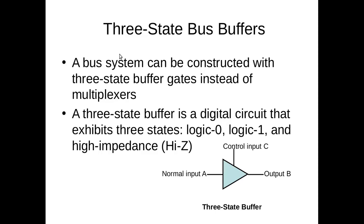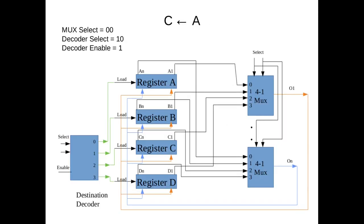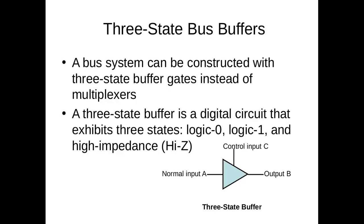In our example there are only 4 registers, but in actual cases there will be many more registers. In that case, this type of design becomes very complicated. So we can use 3-state bus buffers instead.